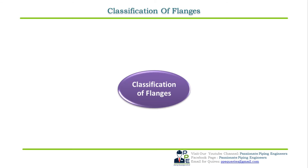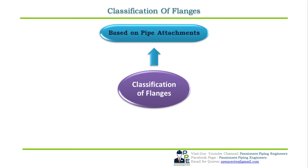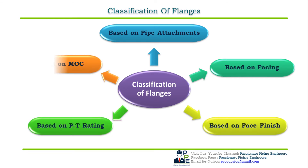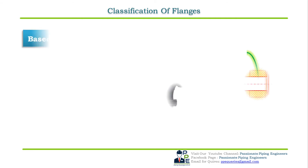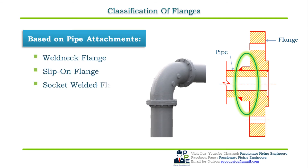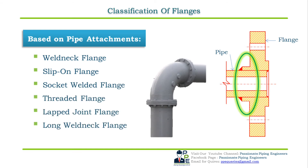Flanges are classified based on: pipe attachments, facing, face finish, pressure-temperature rating, and material of construction. Based on pipe attachment — meaning how the flange is going to join the pipe — the types are: weld neck flange, slip-on flange, socket weld flange, threaded flange, lap joint flange, long weld neck flange, and blind flange.